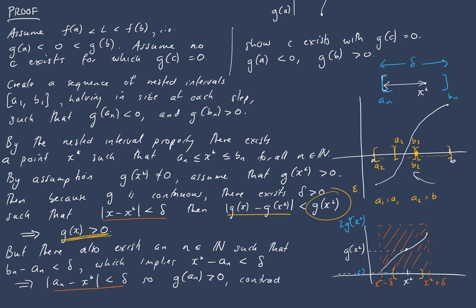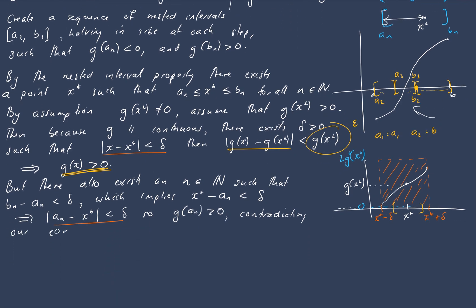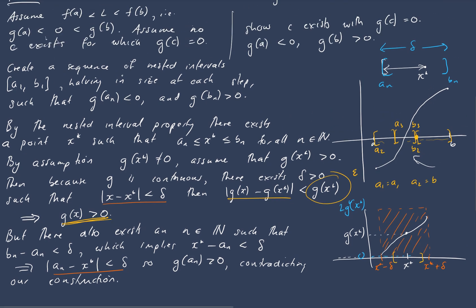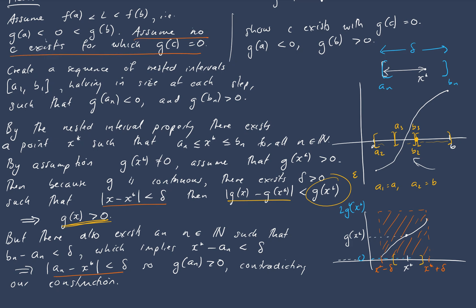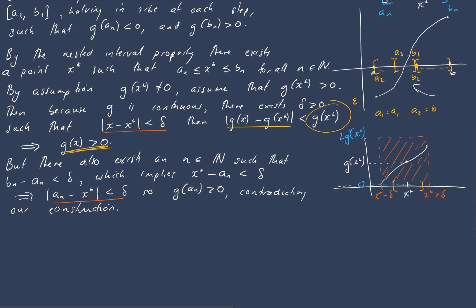So what we can conclude is that our assumption, let's go right back to where our assumption was, that we've just broken must be false. So hence our assumption must be false, and there exists a point c such that g(c) equals 0, which is equivalent of course if we translate back to our original function f, that f(c) is equal to L.